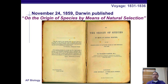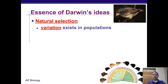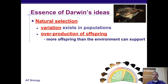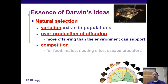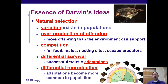The ideas Darwin presented were: natural selection is the mechanism for evolution; variation must exist in populations; there is overproduction of offspring — more individuals are produced than can survive in a given environment. This creates competition for food, mates, nesting sites, and escaping predators, which in turn creates differential survival. Successful traits — called adaptations — make organisms better able to survive and reproduce. This leads to differential reproduction, where those adaptations become more common in the population, and the population changes its allele frequency to reflect this differential survival and reproduction.